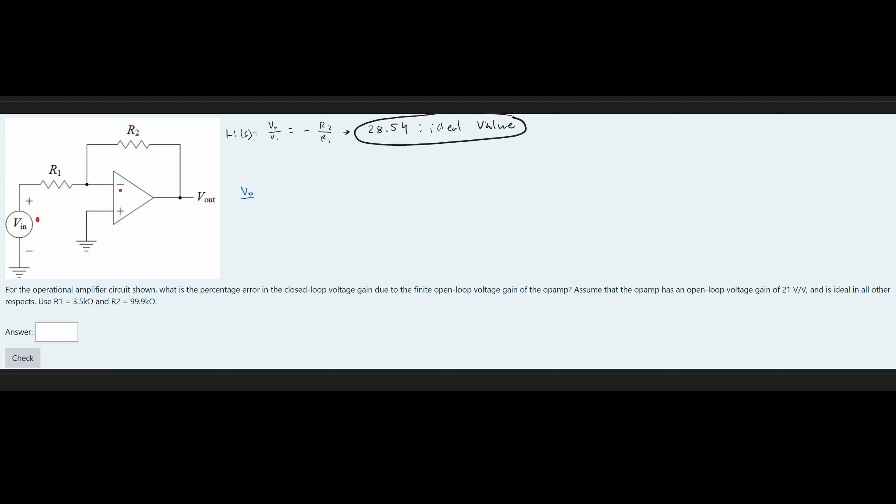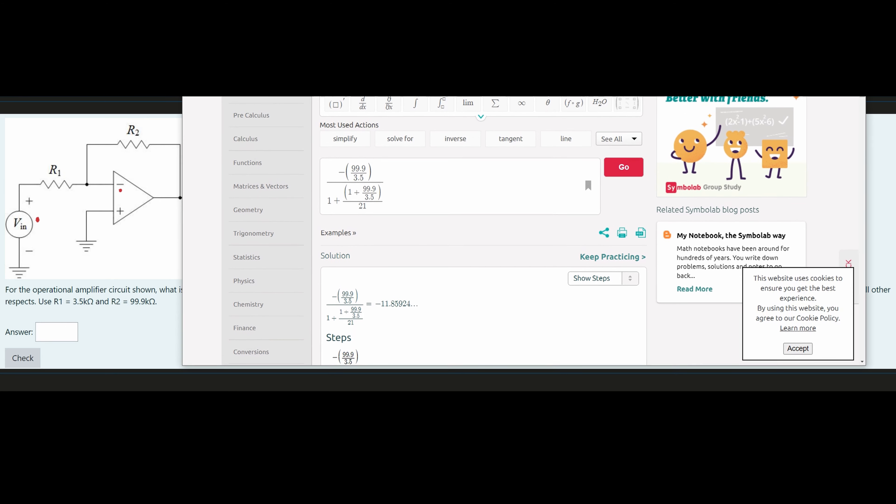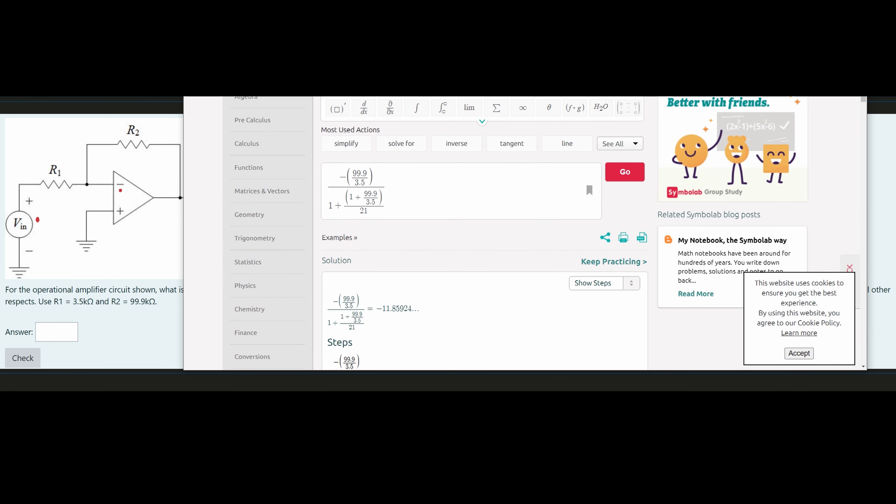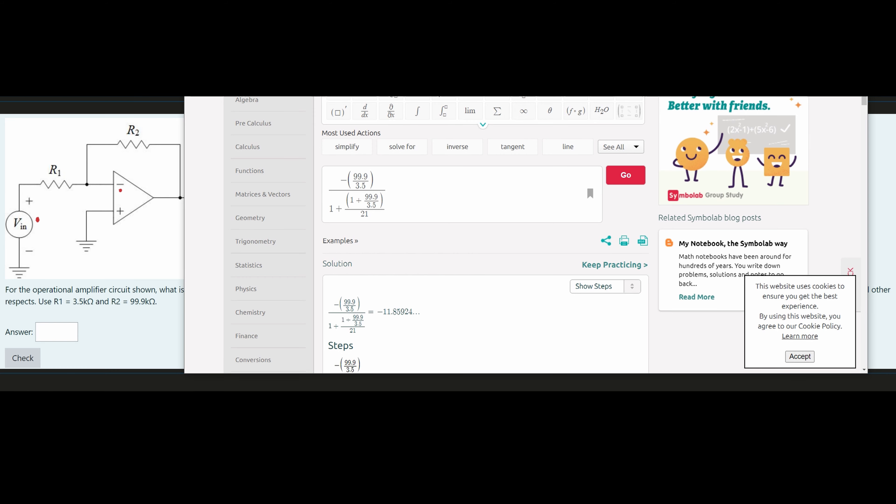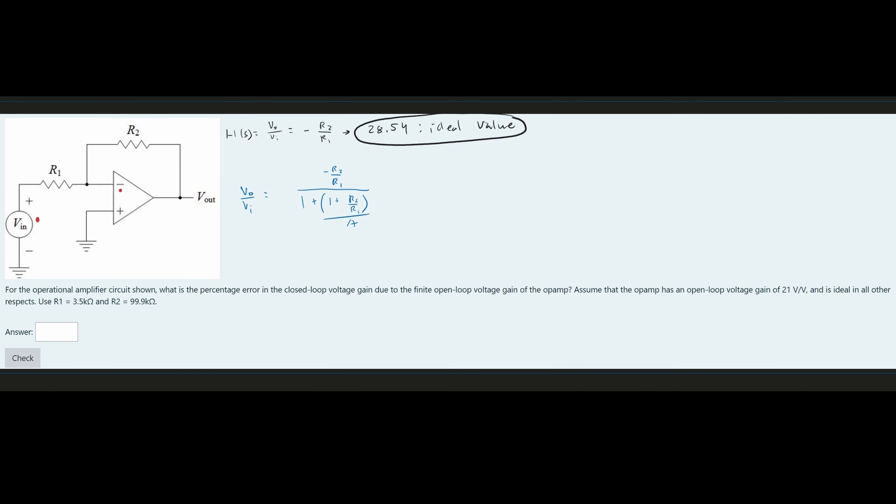We again have our Vout over our V input, and it's equal to our negative R2 over R1. So we are just going to have this as negative R2 over R1. And then inside of here, we have 1 plus R2 over R1, and this is all divided by A. Now to save time, I just put this into a calculator right here with SymbolLab, and we got approximately negative 11.86. So the answer here is negative 11.86, and since we actually took the time to go and calculate this, this is our actual value.